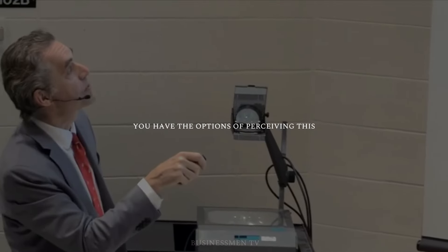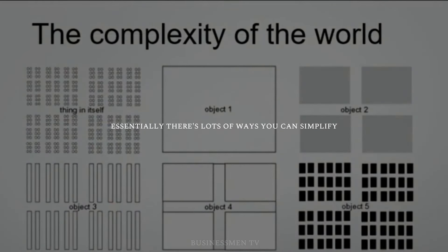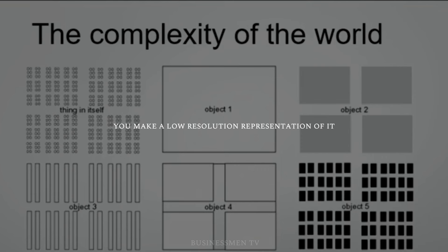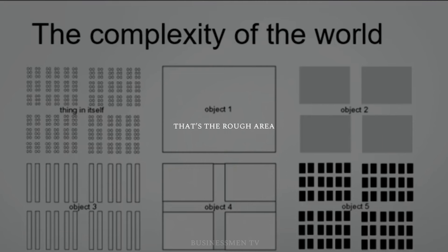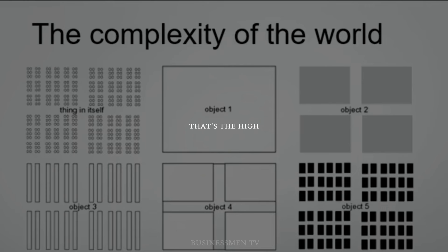You have the options of perceiving this in its full complexity, or you can simplify it. There are lots of ways you can simplify it, but some of them are laid out there. So you take the complex thing and make a low-resolution representation of it — that's the rough area that all those dots occupy, or the rough area broken down to its four most fundamental quadrants. If this was a map of an orchard and you were trying to walk from south to north, that would be a useful representation. This is the highest level of resolution at which you can perceive this object.